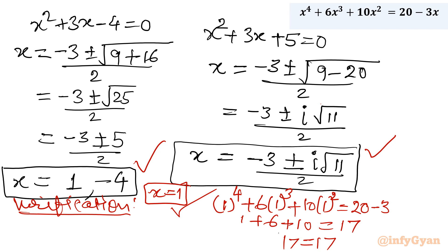If you want to check the second real value x = −4: (−4)⁴ = 256; 6·(−4)³ = −384; 10·(−4)² = 160. So the left side will come out equal to the right-hand side. You will put it in and get the answer. I hope you like this video. Thank you so much for watching. Do not forget to like, share, and subscribe. Bye bye, till next video. Good luck!